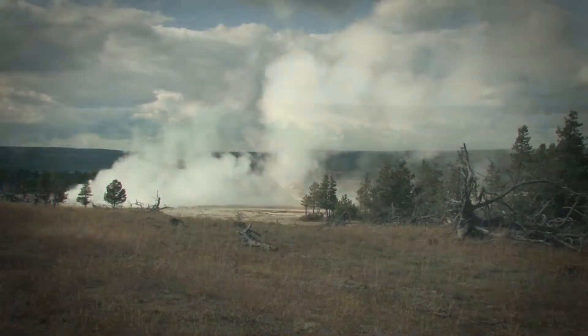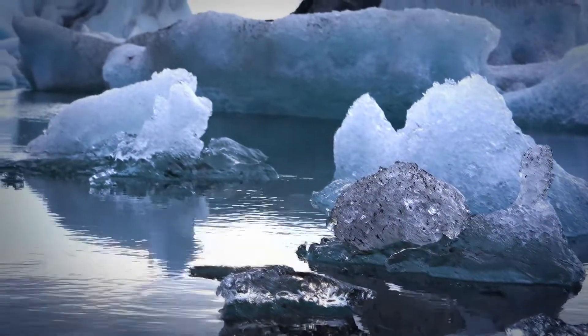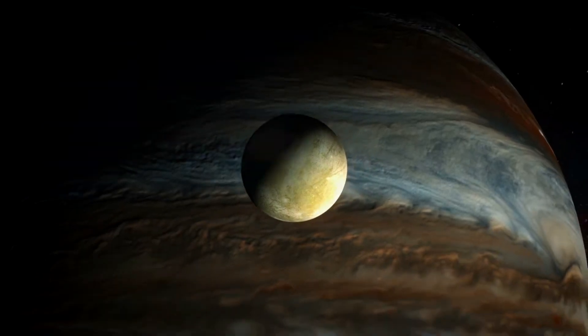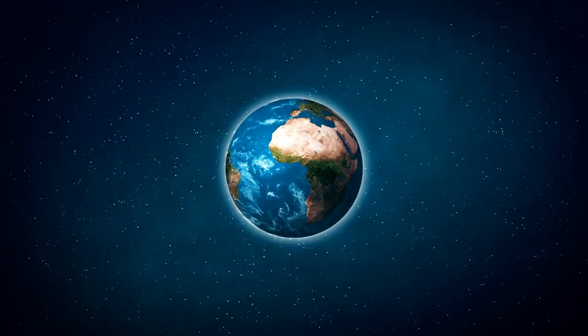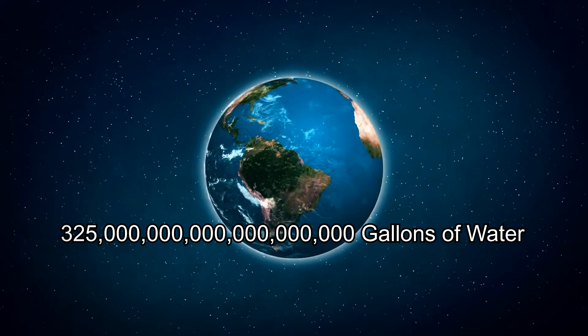Water is everywhere on earth, in all its forms: gas, liquid and solid. And this is what makes earth unique in our solar system. Water is found on many other planets and moons, but not in all three forms. The earth has an estimated 325 million trillion gallons of it.